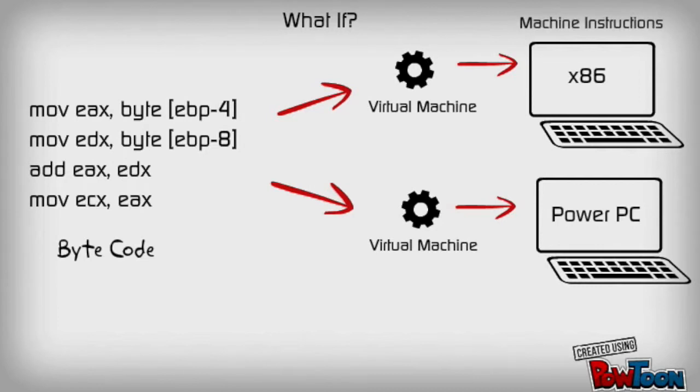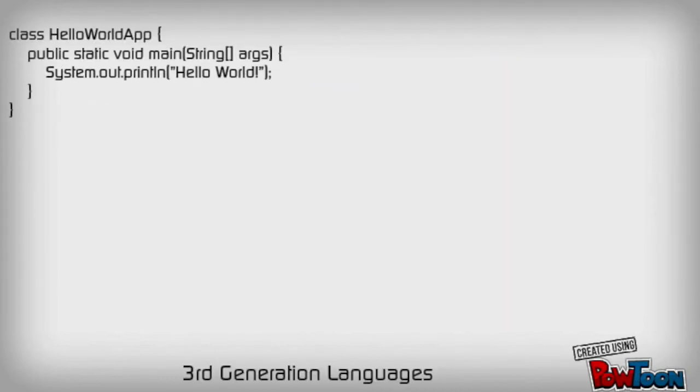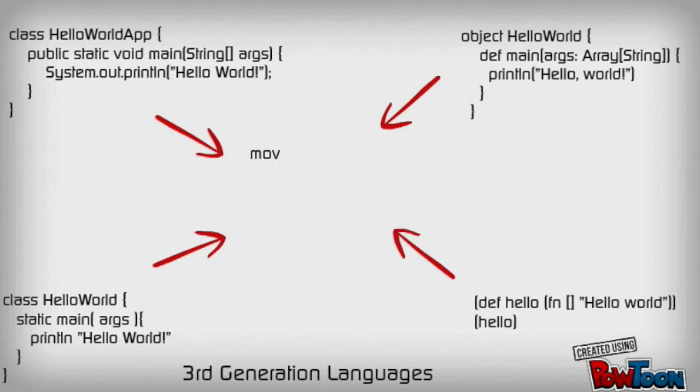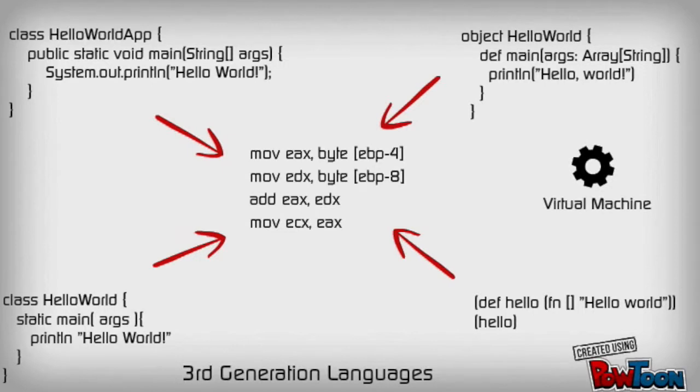And this brought up even cooler concepts, like now the human-readable version of this language could be anything that we wanted it to be. As long as it's still compiled down to this universal bytecode, it could still be interpreted by the virtual machine. And we call these third-generation languages.